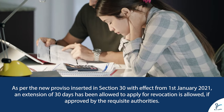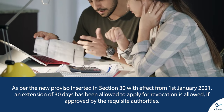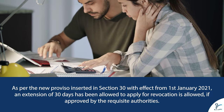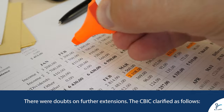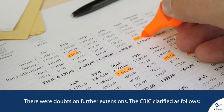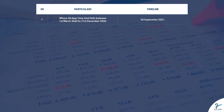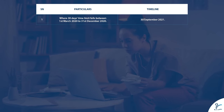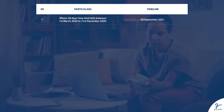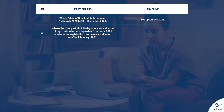As per the new proviso inserted in Section 30 with effect from 1st January 2021, an extension of 30 days has been allowed to apply for a vacation, if approved by the requisite authorities. There were doubts on further extensions, which CBIC clarified as follows: case one — where the 30-day time limit falls between 1st March 2020 to 31st December 2020, the timeline is 30 September 2021.